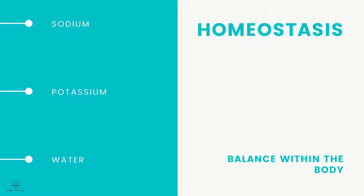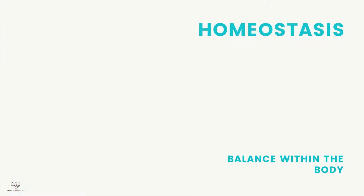Homeostasis. Without balance in our bodies, we would not be able to live. Our bodies are very smart and know when something is out of balance. One of the most important concepts is that the renal system has many functions when it comes to homeostasis because it is a selective filtering system. With the renal system, there is homeostasis of sodium, potassium, and water.